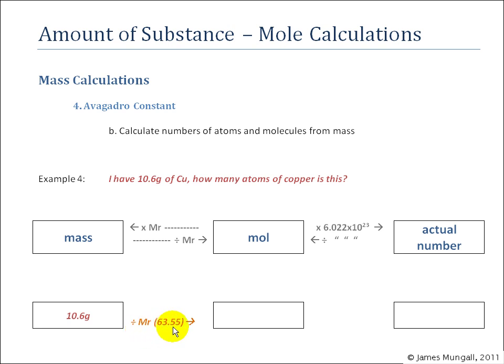Then we'll divide by the MR, MR of copper 63.55 gives, I've just left it as it is, 10.6 divided by 63.55. Then we're going to multiply by the Avogadro constant which will give us 1.004 times 10 to the 23. So this here is the number of those things, copper atoms. We did the MR of copper and now we have the amount of copper in terms of atoms.